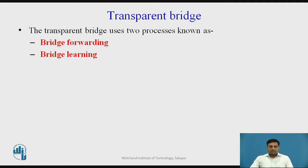We will deal with the first type: the transparent bridge. In a transparent bridge, there are two processes involved in its operation — bridge forwarding and bridge learning. In the bridge forwarding process, whenever a frame comes to the bridge, before forwarding it, the bridge looks into its database for the destination address. If the destination address is present, the bridge forwards the frame to a single port to which the destination host is attached. If it is not present, the bridge floods the frame — sending it on all ports.